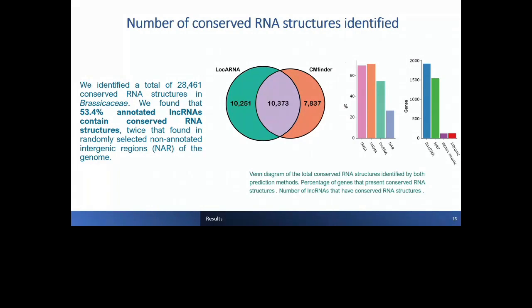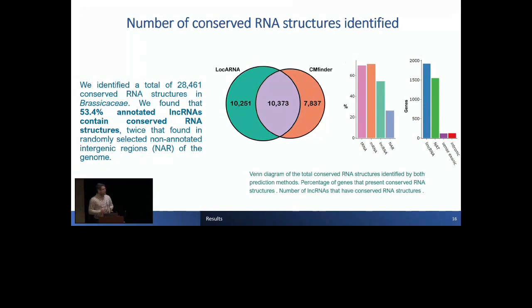We applied this to all annotated long non-coding RNAs and other genes. We identified 28,000 conserved RNA structures between these species. For comparison, we used different gene types: tRNAs, whose principal function is based on their structures, show around 70% conservation — similar to mRNAs, which also have many conserved structures. Long non-coding RNAs show approximately 52% having conserved RNA structures. As a negative control, we used intergenic regions with no annotation, which show only a small fraction of conservation.